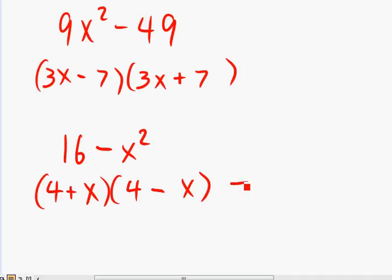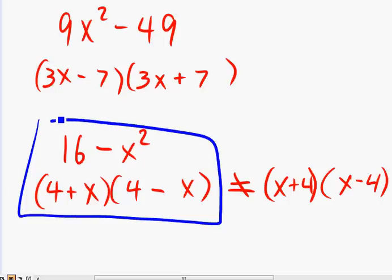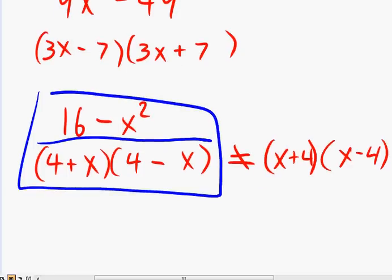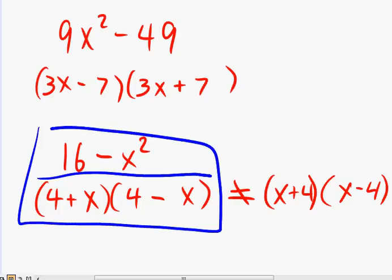But just a note, this is not the same as x plus 4 and x minus 4. Both of these will give you different values. They're not the same. So order does matter. So for this question over here, 16 minus x squared, the factors are 4 plus x and 4 minus x. It's not the other one. Thank you for watching. Looking forward to hearing your comments and also seeing you at the next video.